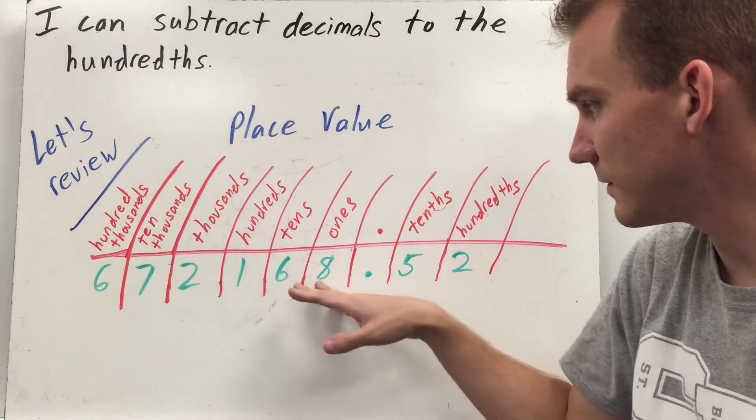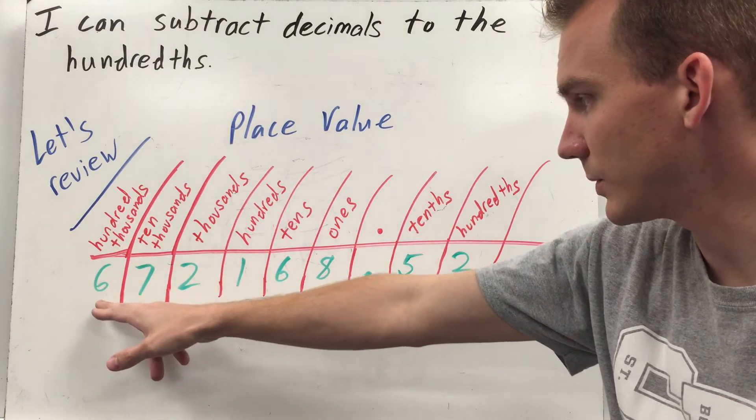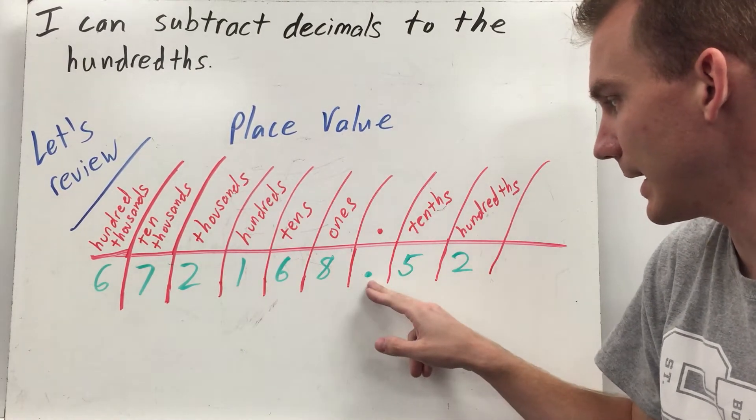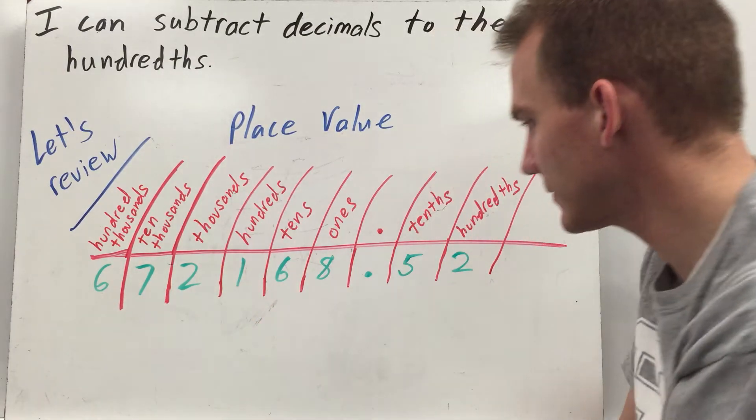Place value is the value that each digit has within a number. So for example in this number which is 672,168 and 52 hundredths, you have your ones, your tens, hundreds, thousands, ten thousands, hundred thousands.